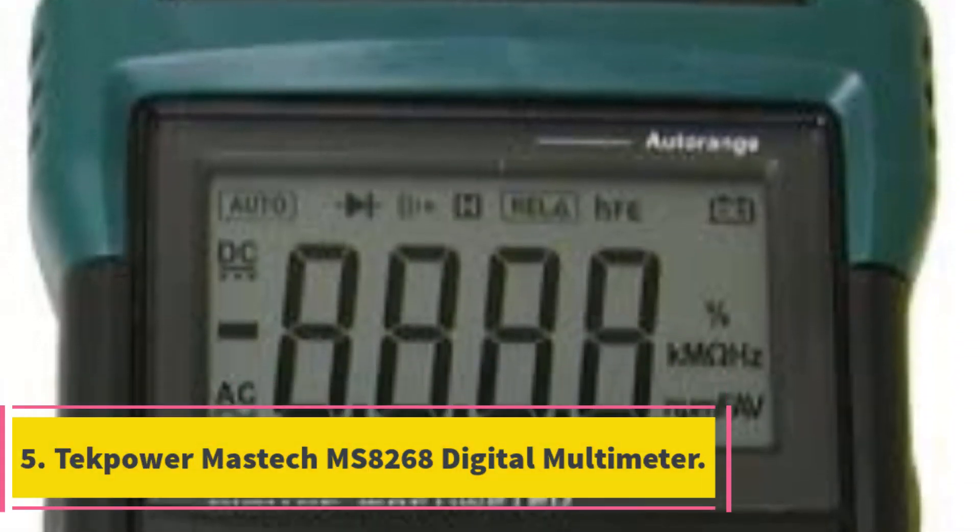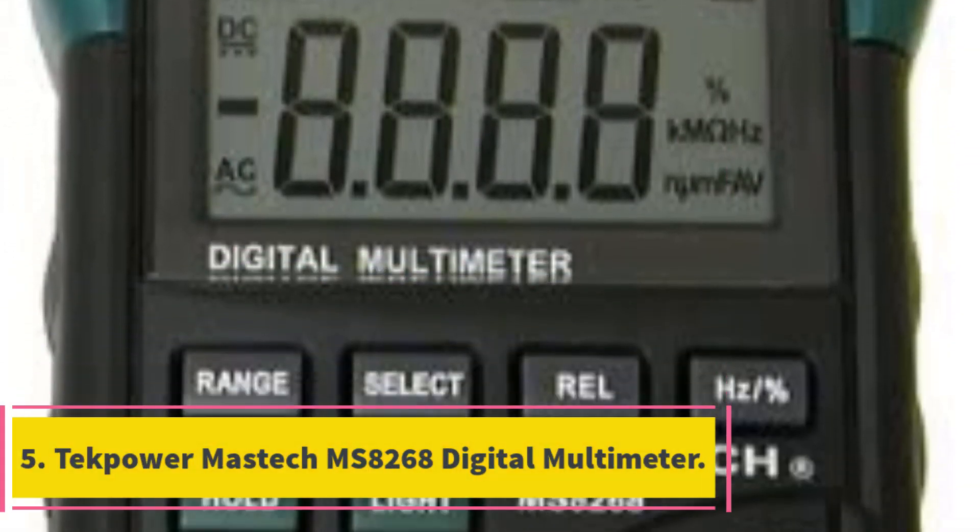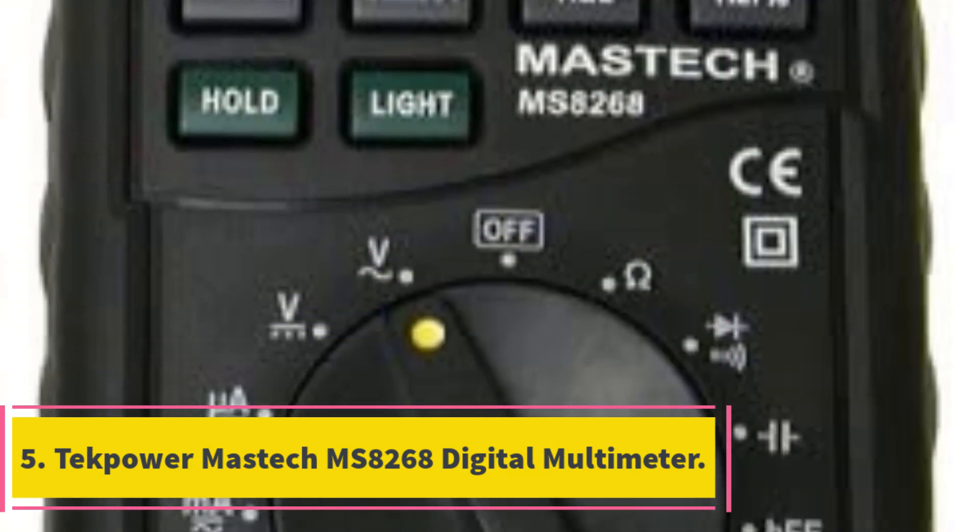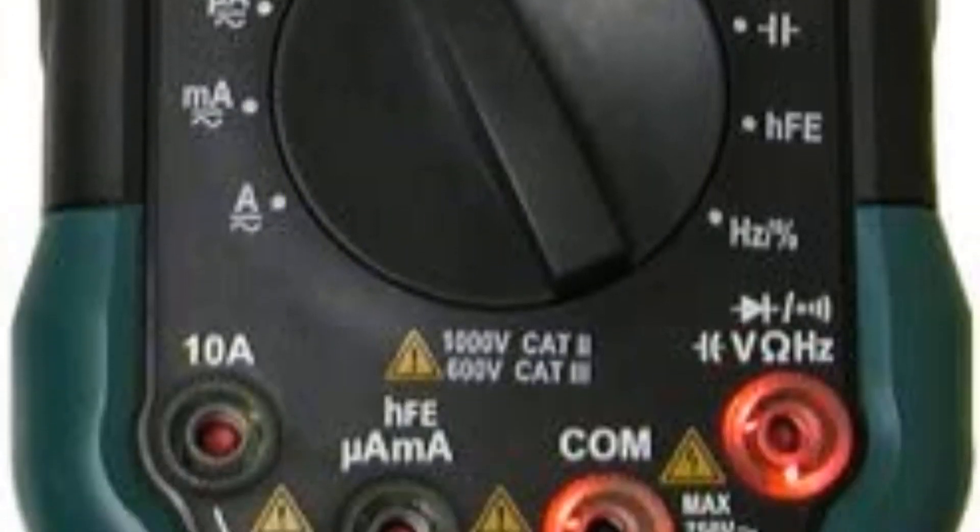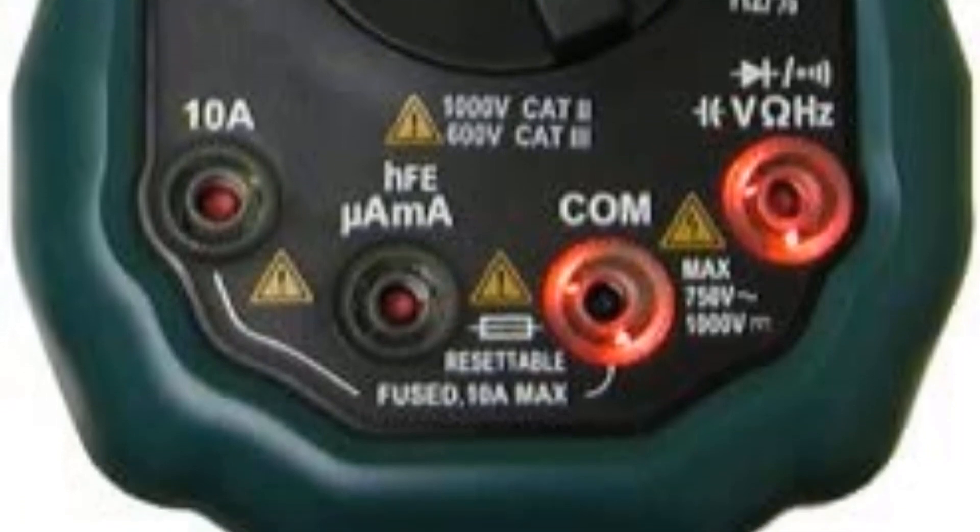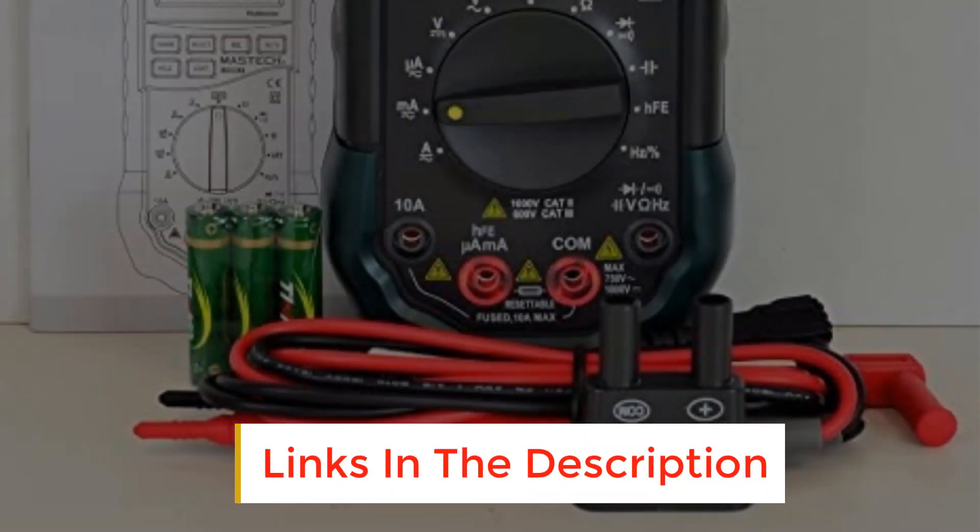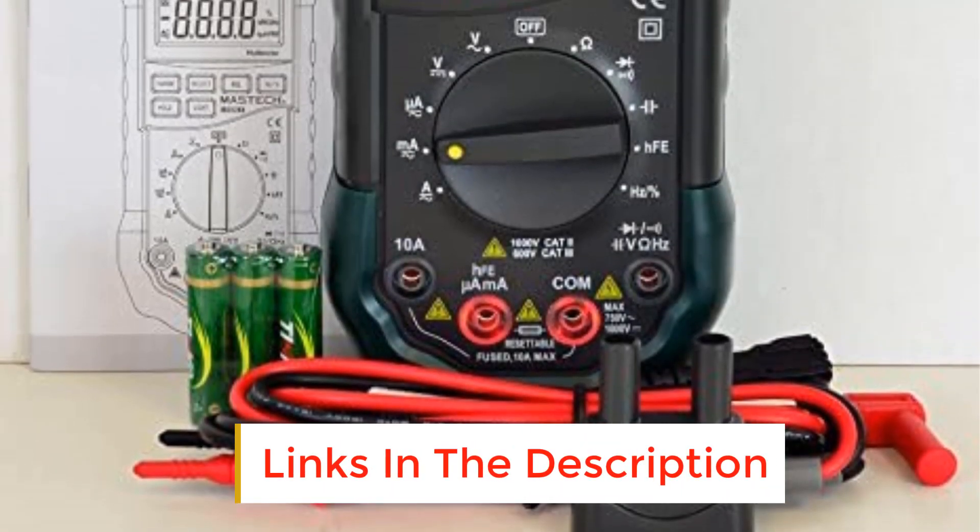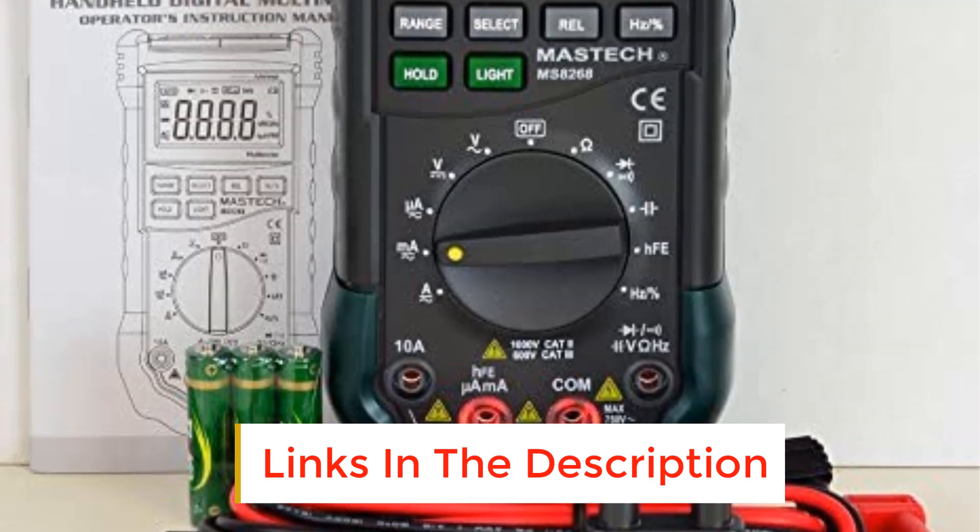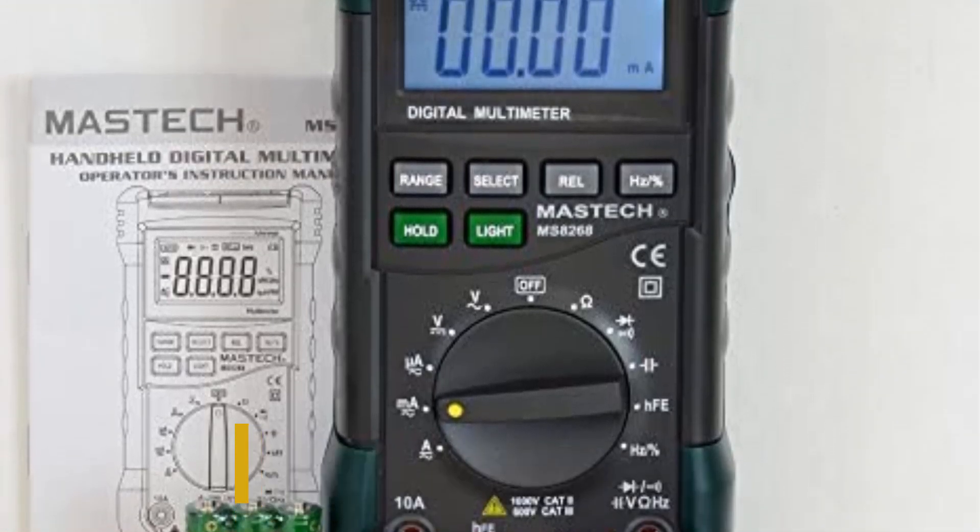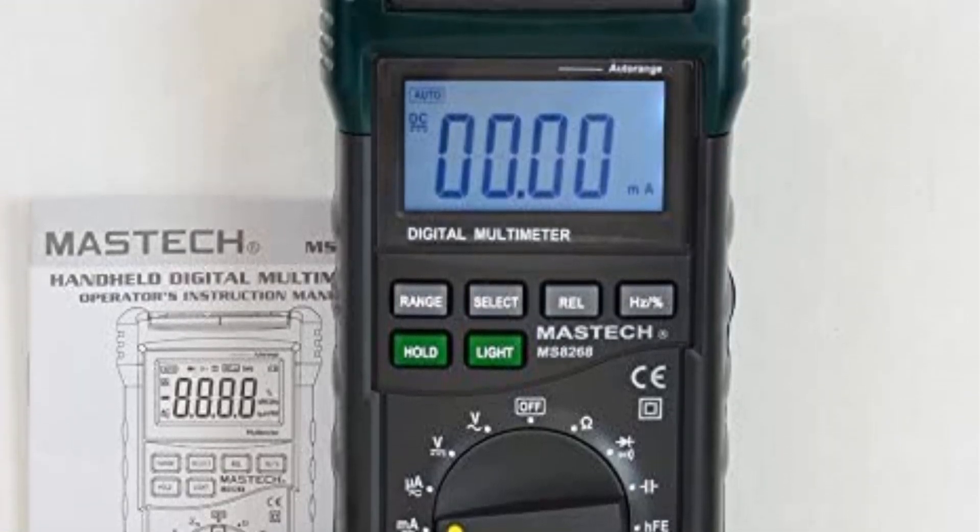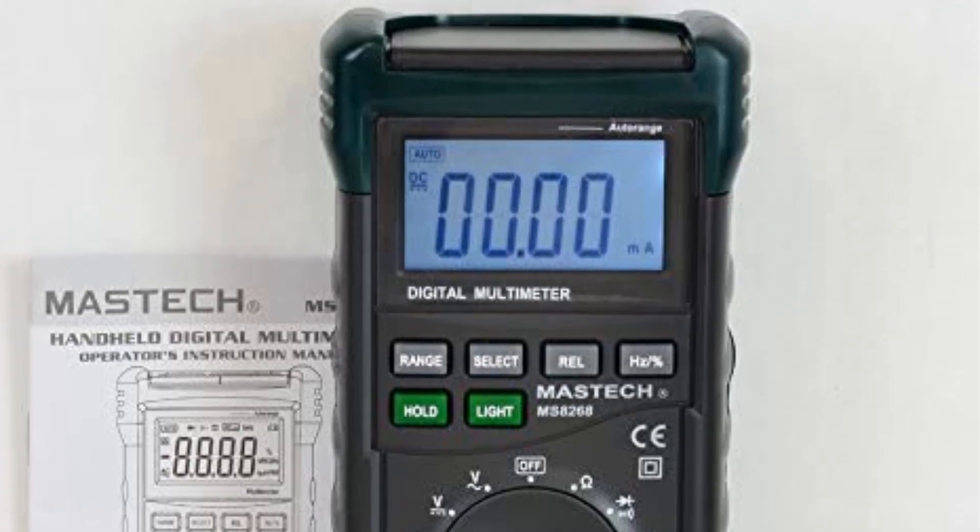Number 5. TechPower Mastech MS8268 Digital Multimeter. Safety features like sound and light warnings and accessibility details such as the backlit LCD screen make this multimeter a nice middle ground buy. Beginners love that this model's flashing lights will indicate which port to use if you're accidentally connecting to the wrong one.